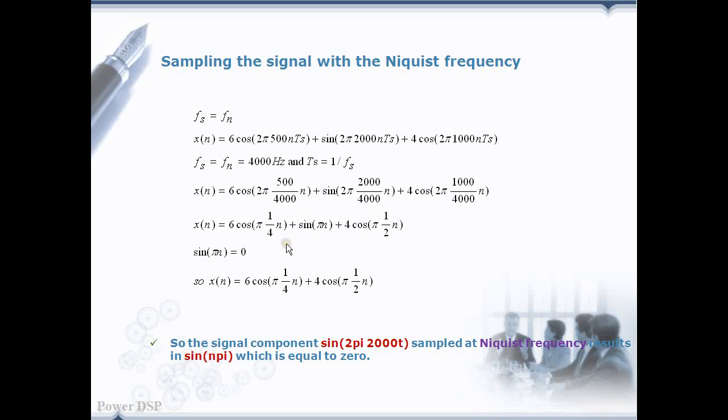Here please see this second term sin n pi which is equal to 0 as always. So we ended up with the discrete signal x of n which contains only two components. The ultimate point here is that we completely miss a component sin 2 pi 2000 t if we sample the signal with Nyquist rate.